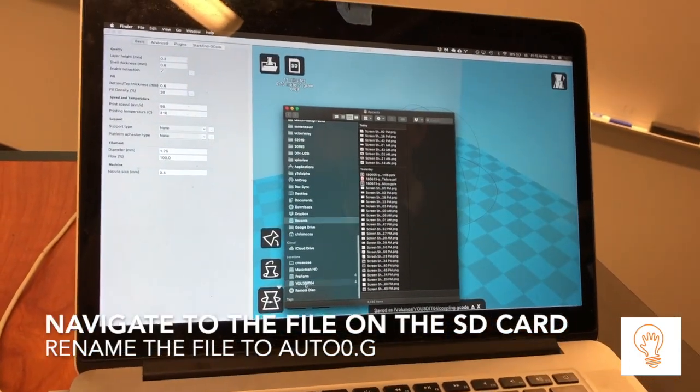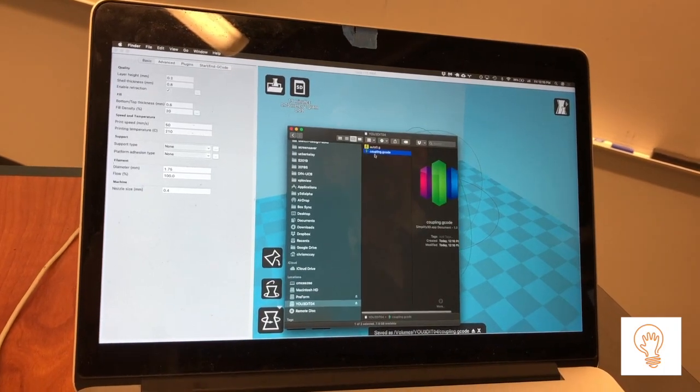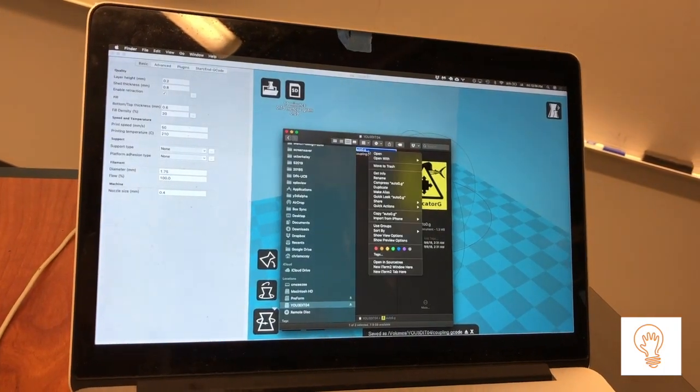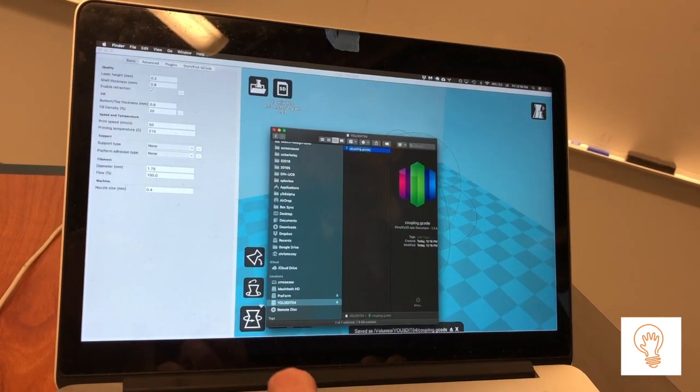Now we have to go into the file for the SD card. You can see there's actually an auto0.g file already in there but we're going to delete that one and move it to trash.